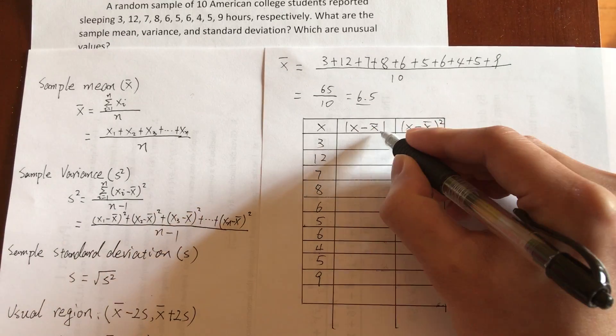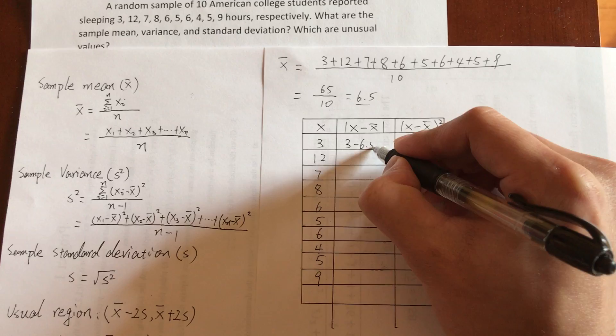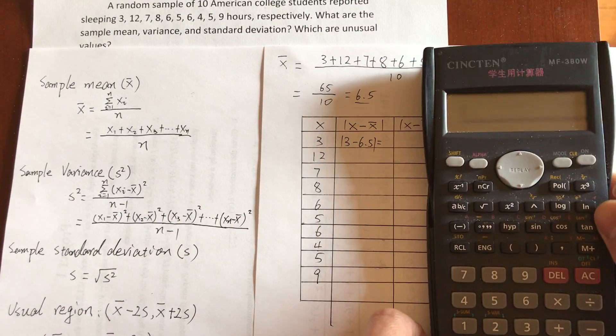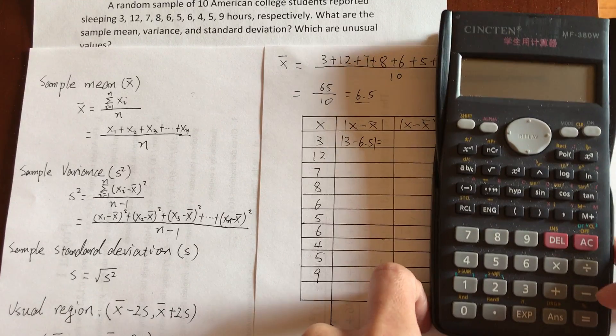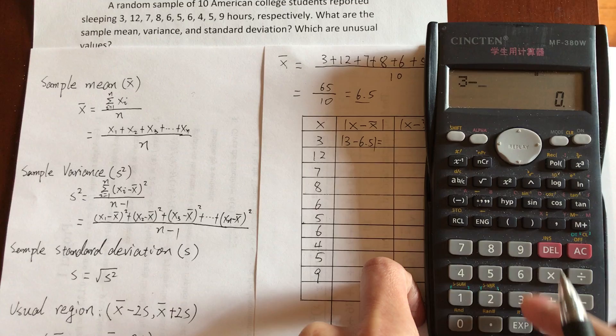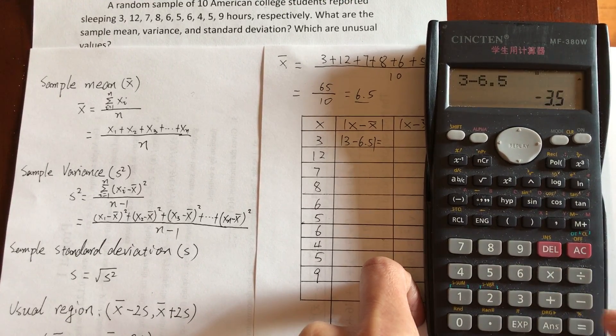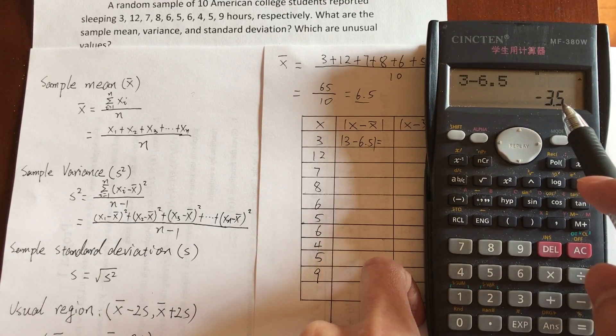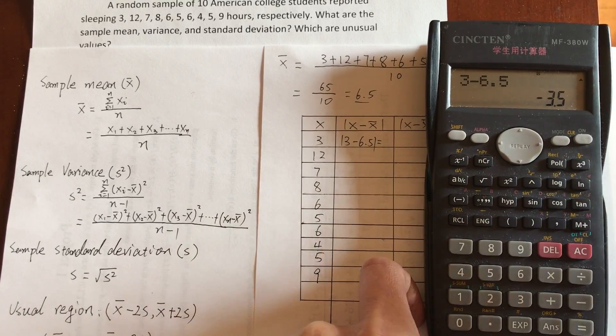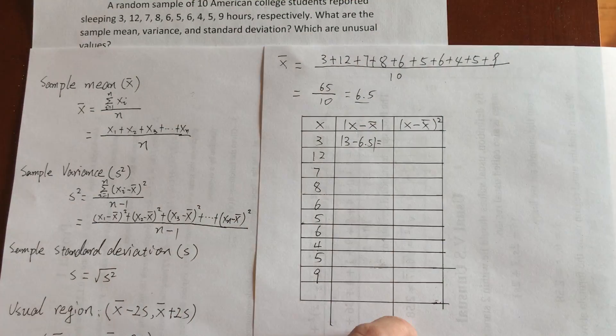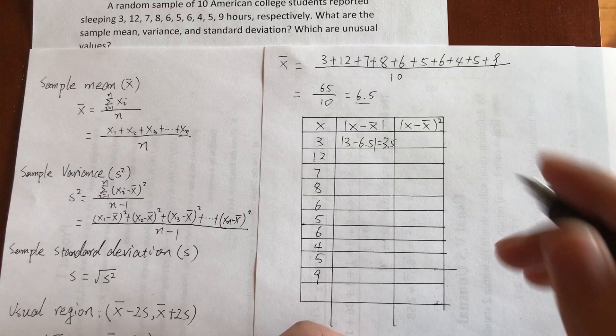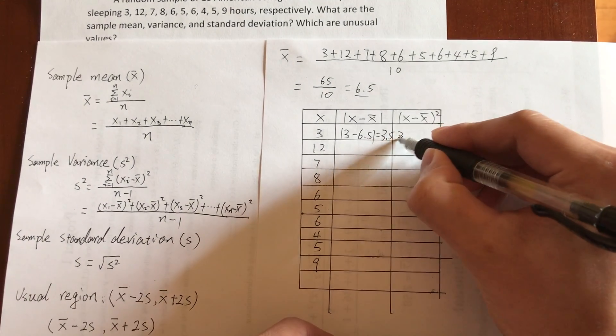Now you apply this: 3 minus 6.5 absolute value equals 2, using a calculator. 3 minus 6.5 equals negative 3.5, but since it is absolute value, ignore that negative, just write 3.5, and then we square the 3.5.